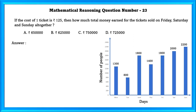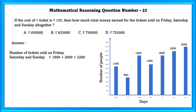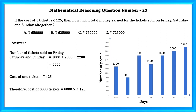Mathematical reasoning question number 23. If the cost of one ticket is 125 rupees, then how much total money was earned for tickets sold on Friday, Saturday, and Sunday together? The number of tickets sold on Friday, Saturday, and Sunday is equal to 6000. The cost of one ticket is 125 rupees. Therefore, the cost of 6000 tickets is equal to 7,50,000 rupees.